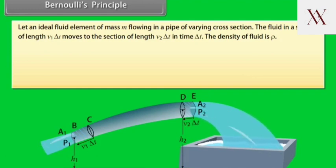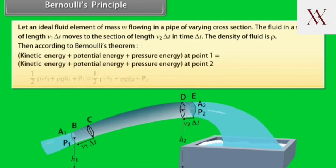The fluid in a section of length V1 delta T moves to the section of length V2 delta T in time delta T. The density of fluid is rho. Then, according to Bernoulli's theorem, sum of kinetic energy, potential energy and pressure energy at point 1 equals sum of kinetic energy, potential energy and pressure energy at point 2.